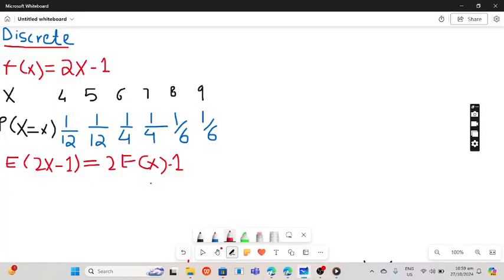Welcome to another problem. Given n, f(x) is 2x minus 1. We have to find the expected value of this discrete random variable. I have already broken down that you have to find only E of x, so let's start to solve it.